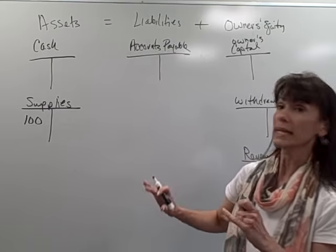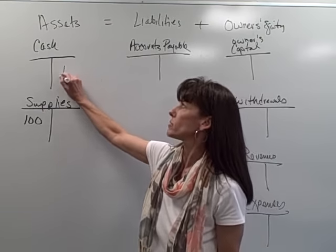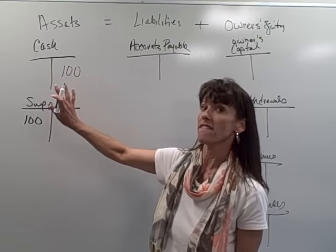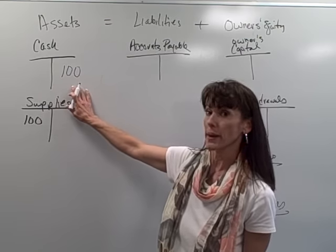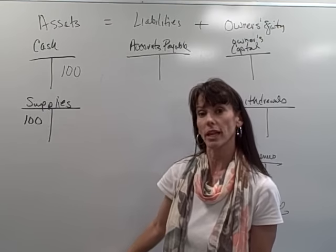Well, we can make a kind of a random guess and we can say, well, we might have paid out cash. So we might have, the other account affected might have been the cash account. But I'm not really sure because another option would have been, can you figure it out?